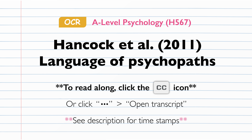Hancock et al, 2011: Language of Psychopaths. Background: What is a psychopath? Psychopathy is a well-known disorder which is most commonly characterised by certain types of antisocial behaviour. Specifically, these include behaviours such as lack of empathy and remorse, narcissism, impulsivity and risk-taking, and inclination towards manipulating people and being violent, and other more general egotistic traits.